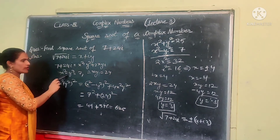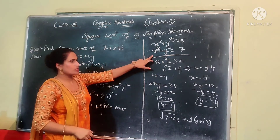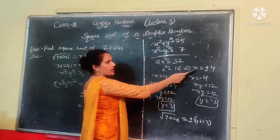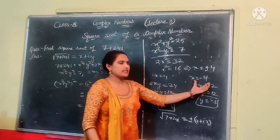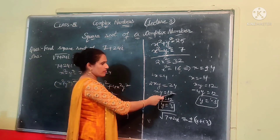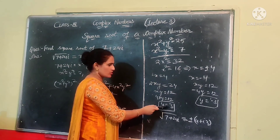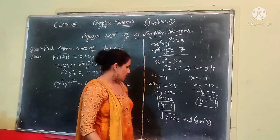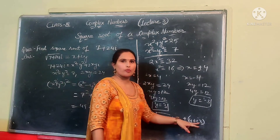We also have x squared minus y squared equals 7. Solving these two equations, we get 2x squared equals 32, so x squared equals 16, which gives x equals plus or minus 4. Since 2xy equals 24, we have xy equals 12. When x equals 4, y equals 3. When x equals minus 4, y equals minus 3. Combining these results, the square root of 7 plus 24 iota equals plus or minus (4 plus 3 iota).